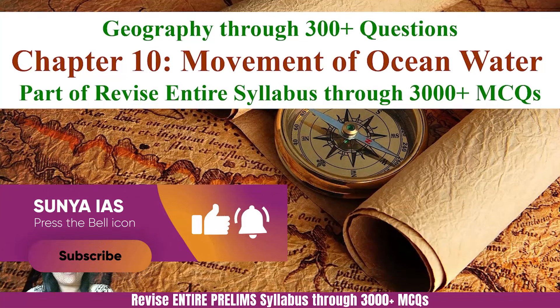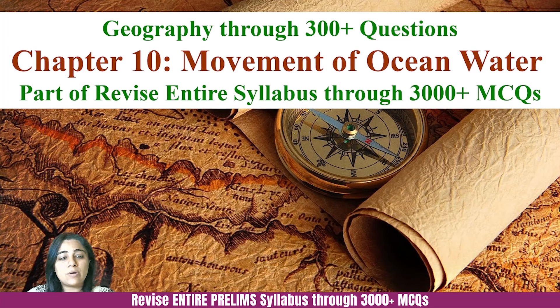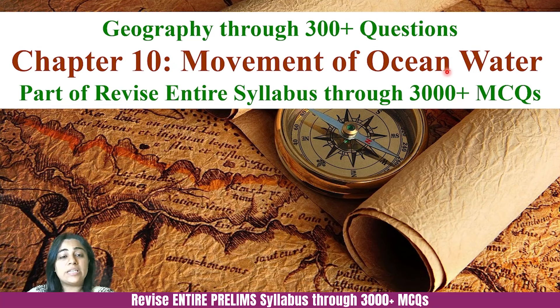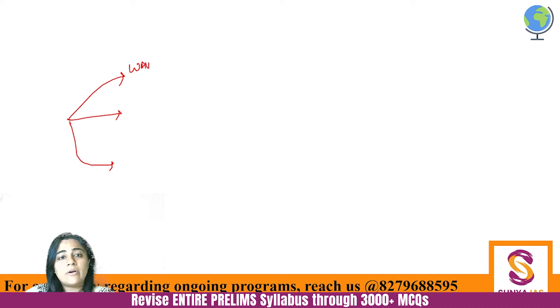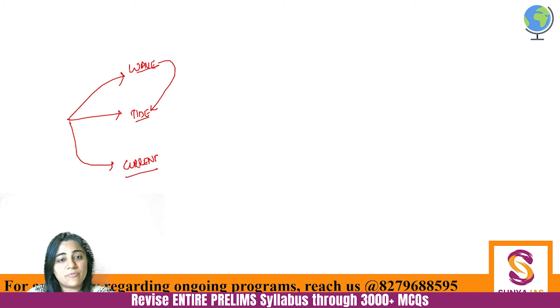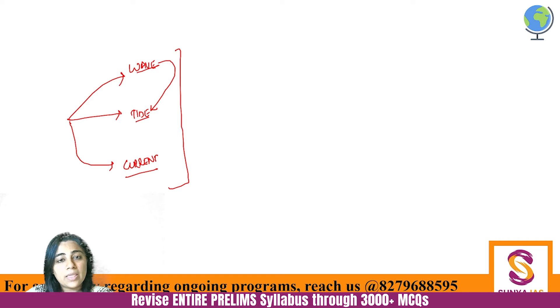Hello everyone, welcome to SUNY IS and welcome to this lecture. In this lecture we are going to talk about movements of ocean water. We have talked about where and how water exists on the planet. There are three kinds of movements we need to study: one is a wave, one is a tide, and another is ocean current. Tide is actually a subsection of a wave, a form of a wave. These three movements are very important from the exam perspective.